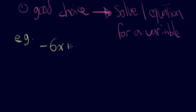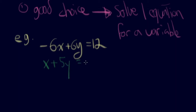So, negative 6x plus 6y equals 12 — that's one equation. And the other one is x plus 5y equals negative 14. I want to know where these two lines cross. We're going to solve this by substitution, so I need one of these equations to say x equals or y equals. The obvious choice is to make the second equation say x equals, because it's easy to do that.